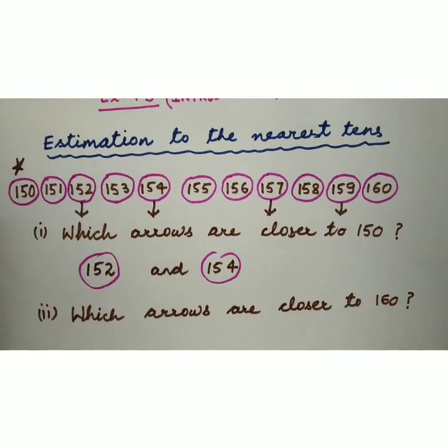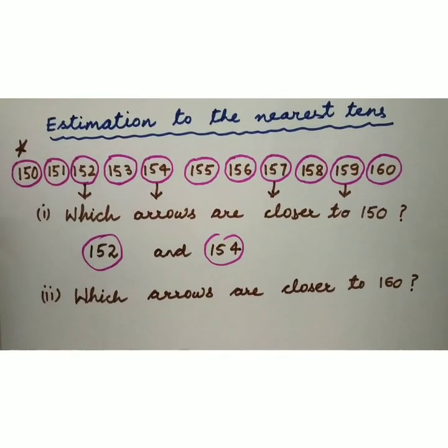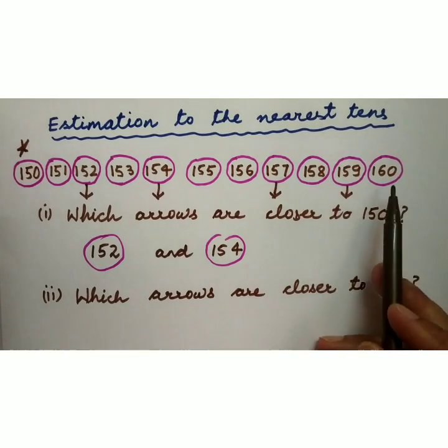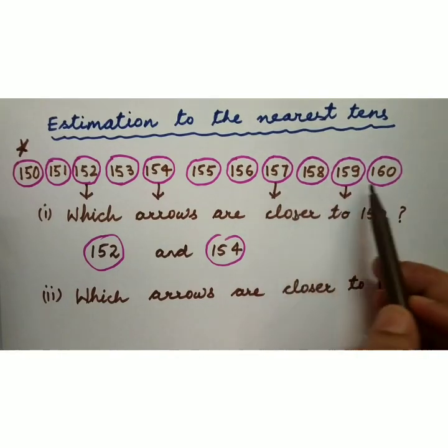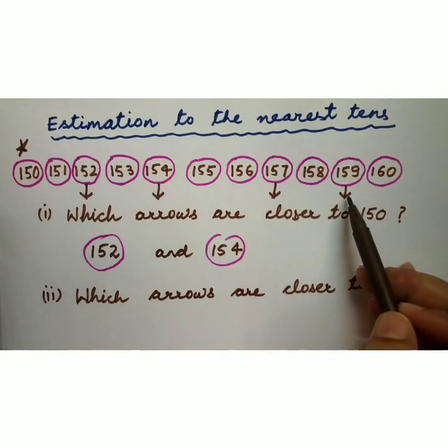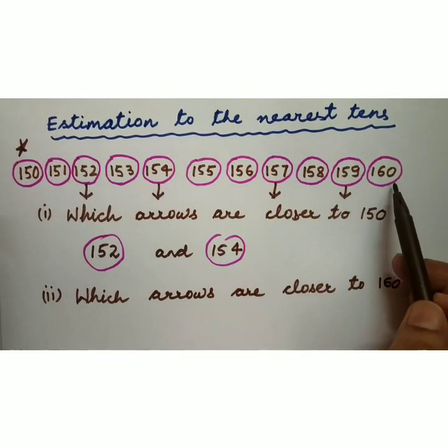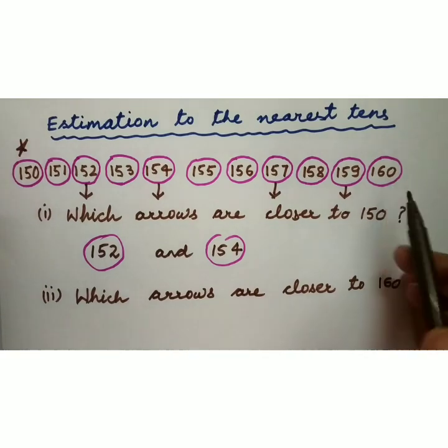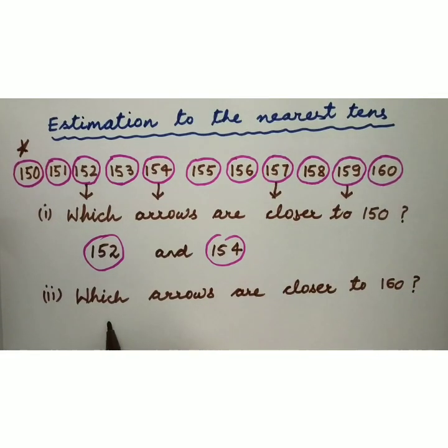Now next, which arrows are closer to 160? Kaunse arrows 160 ke zyadha close hain? To we can see 157 and 159. Ye dono arrows 160 ke zyadha closer hain. So answer is 157 and 159.